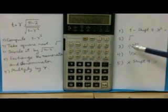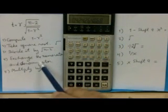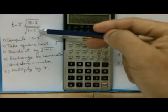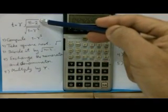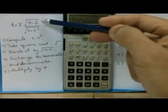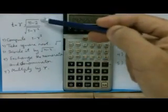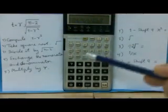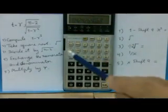About that, you need to exchange numerator and denominator. You divided denominator by numerator already, so you have to exchange numerator and denominator to get this value, so press 1 by X.